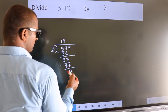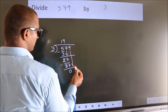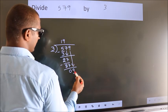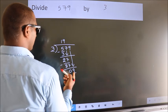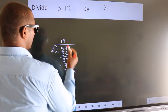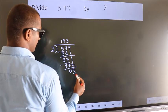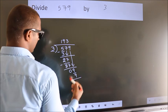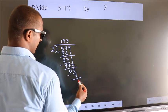After this, bring down the beside number. So, 9 down. So, 9. When do we get 9? In 3 table, 3 threes is 9. Now, we subtract. We get 0.